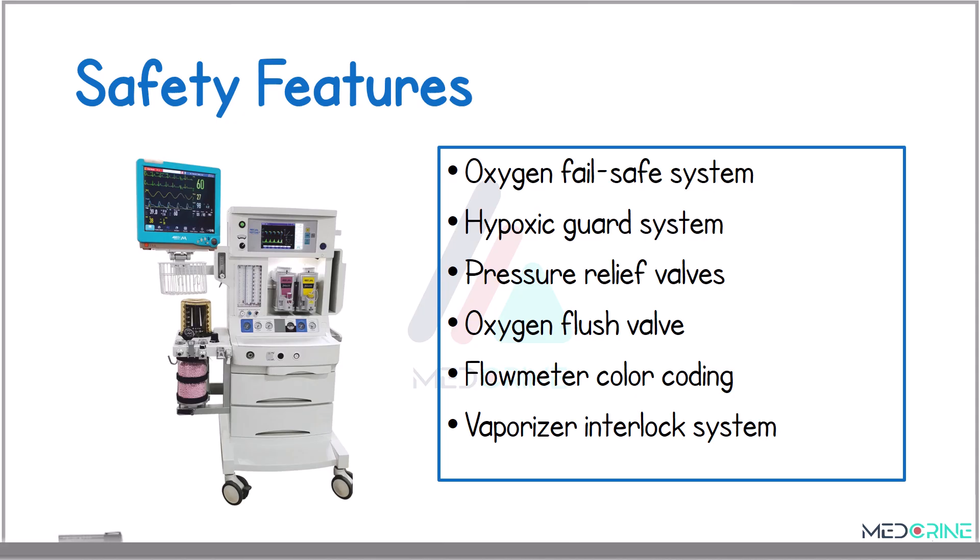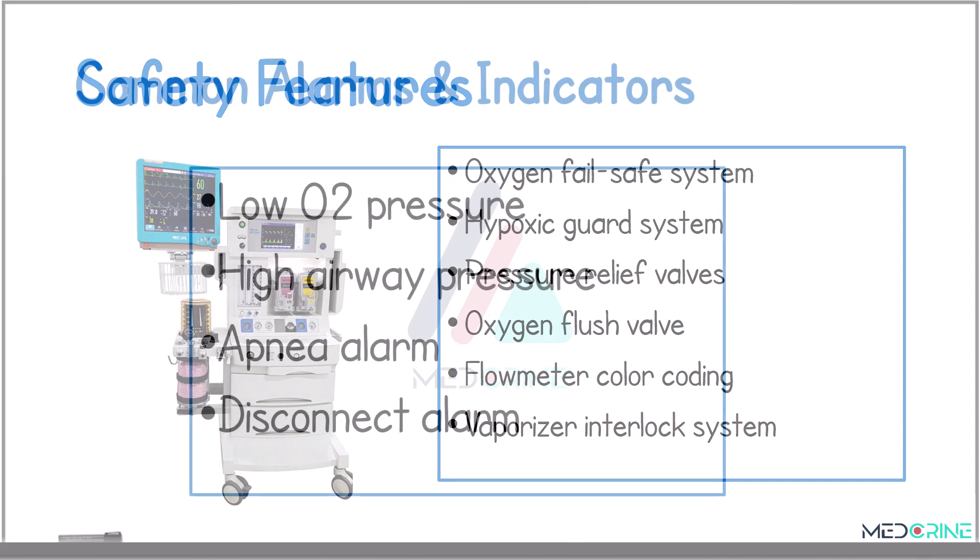Some of the safety features of anesthesia machines include an oxygen fail-safe system, a hypoxic guard, pressure relief valves, an oxygen flush valve, flow meter color coding, and a vaporizer interlock system to prevent multiple agents from running simultaneously.